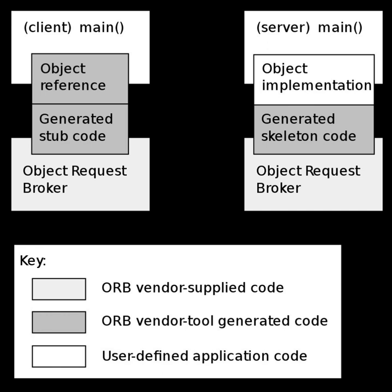You always incarnate a servant before calling activate_object, but the reverse is also possible: create_reference activates an object without incarnating a servant, and servant incarnation is later done on demand with a servant manager. The Portable Object Adapter is the CORBA object responsible for splitting the server-side remote invocation handler into the remote object and its servant. The object is exposed for the remote invocations, while the servant contains the methods that are actually handling the requests. The servant for each object can be chosen either statically or dynamically for each remote invocation, in both cases allowing the call forwarding to another server.